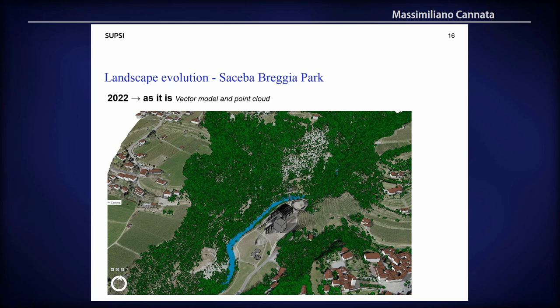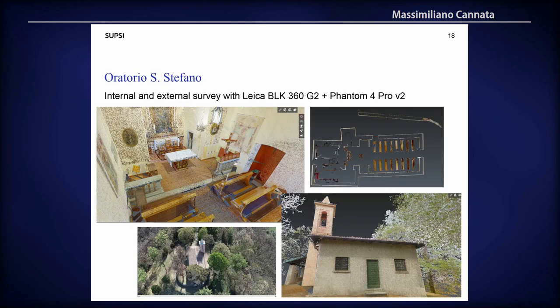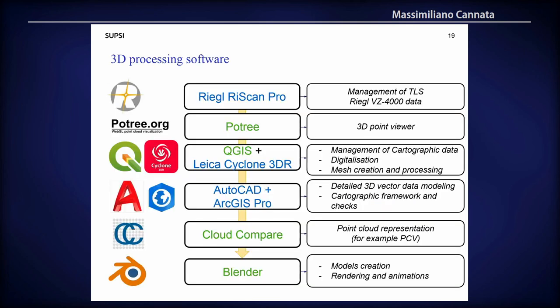These are some of the results of the territorial model. This is the process of creating a virtual model that is based on the landscape area and is not related just to architectural buildings. This is the interior and exterior of the historical church, which has been done with laser scanning — both internal and external — using the Leica BLK, and also with the Phantom using photogrammetry and drone.